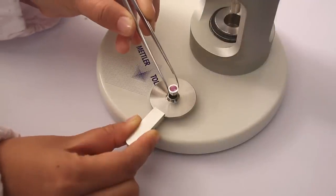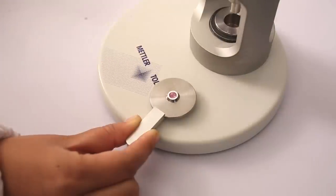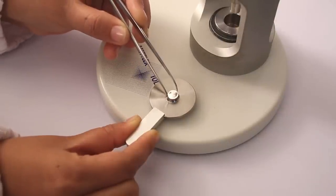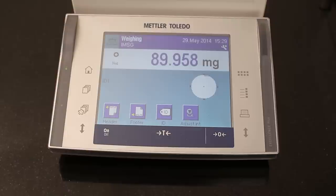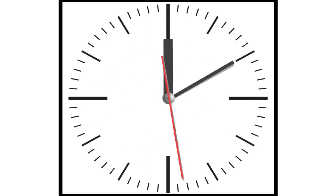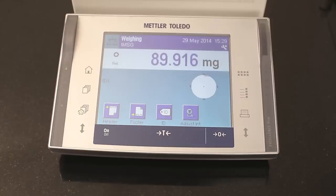Cold weld the lid to the crucible and check the weight gain. Leave it on the balance for some time. The crucible is tight if the weight does not decrease by more than 20 micrograms within 5 minutes.